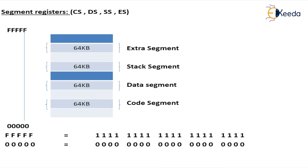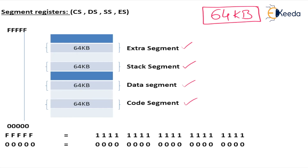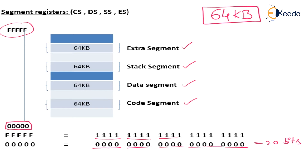The 8086 microprocessor memory is divided into four segments: code segment, data segment, stack segment, and extra segment. The size of each segment is 64 kilobytes — remember this, it is very important. The minimum address is 00000 (five zeros) and the maximum address is FFFFF in hexadecimal, totaling 20 bits.